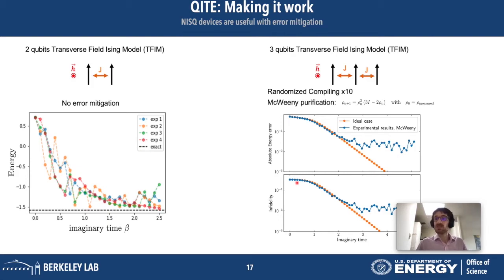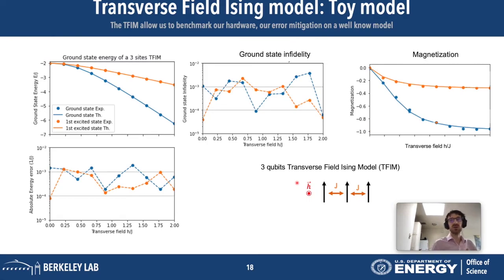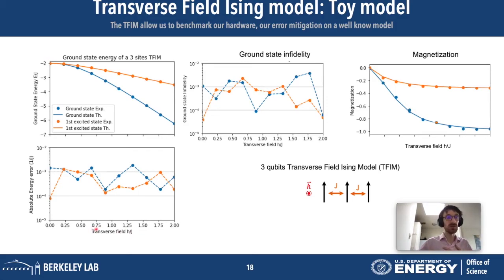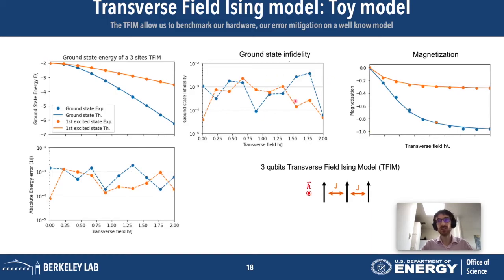What's nice about randomized compiling is it's not too hard on the hardware, so we can run many experiments. We've done this to showcase a phase diagram — even for just three sites, all points shown are experimental data, not theory. The points represent the energy of the ground state and first excited state as a function of the transverse field parameter in the Ising model. In solid lines are the theoretical ideal values, and you can see we are right on them. The absolute energy error is in the range of 10 to the minus three to 10 to the minus four, and we can also measure observables like magnetization with very good agreement.